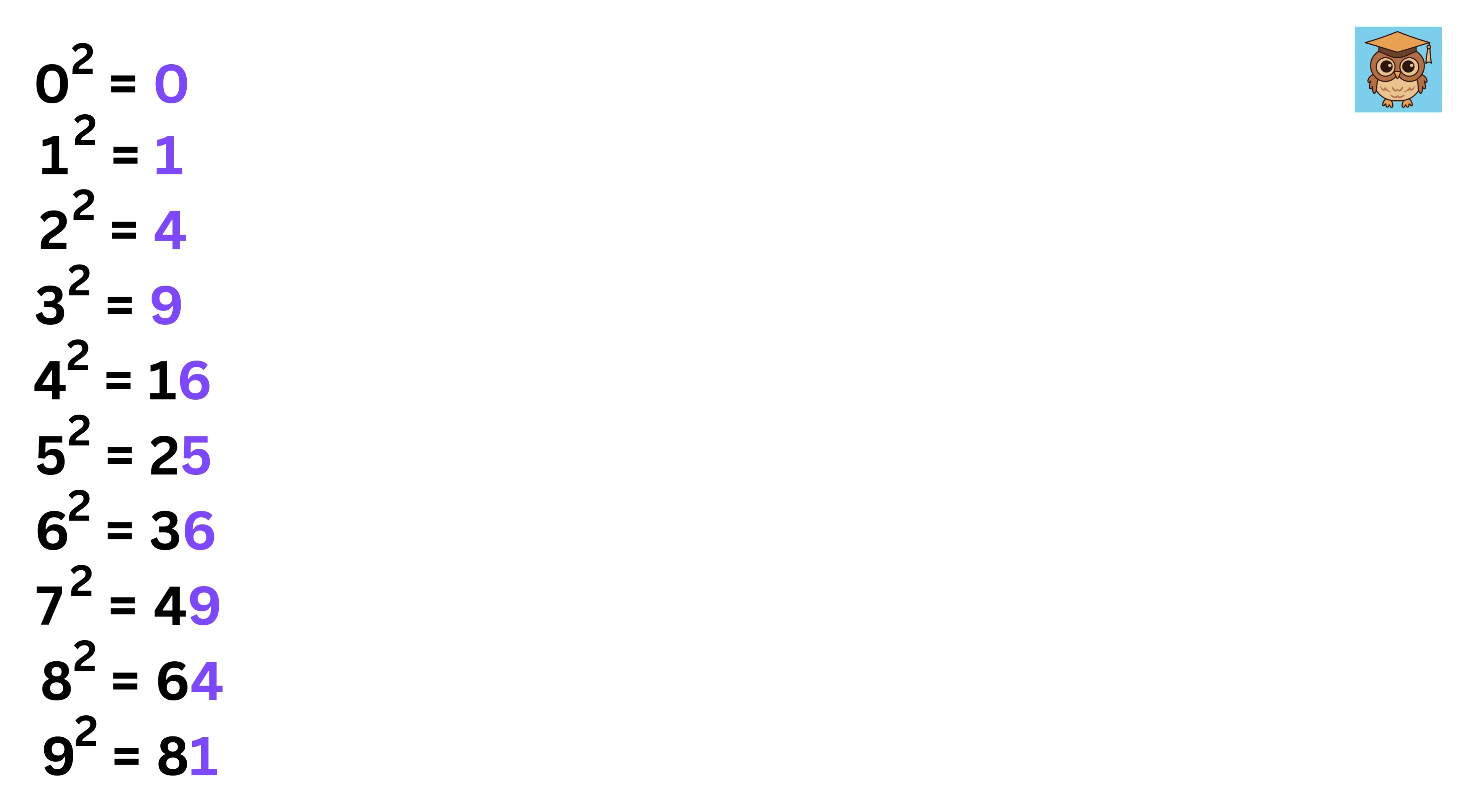Great. Now, let us level up our gear and find the square root of 729. Look at its last digit, which is 9. It either ends up in 3 square, which is 9, or 7 square, which is 49. So, write here 3 and 7.